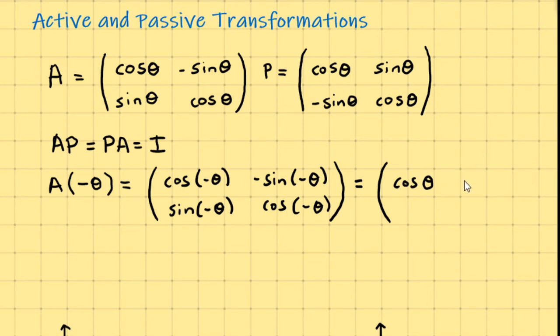And sine of minus theta is the same as cosine theta, but because there's a minus there already, we get back regular sine theta. Sine of minus theta is minus sine theta, and cosine theta again. So what you see is that substituting minus theta into the active matrix gives you the passive matrix, which is the same thing as the inverse.